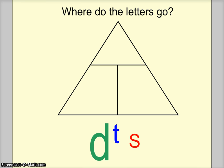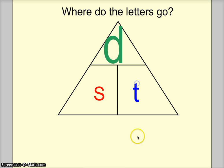Let's see if you remember where these letters go. Go ahead and place them. Which letter goes on top? Which letter goes on the left? And which letter goes on the right? D is on top, S is on the left, T is on the right.